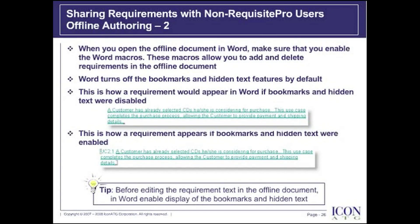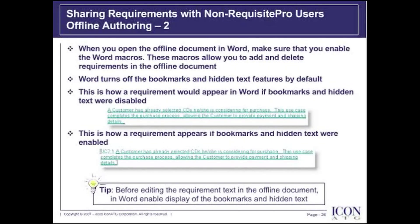By default, Word also turns off the bookmarks and hidden text features. On the slide, I've shown how the requirement would appear if bookmarks and hidden text were disabled. To enable bookmarks and hidden text in Microsoft Word, click Tools, Options to open the Options dialog box, and from the View tab, select the Bookmarks and hidden text checkboxes.